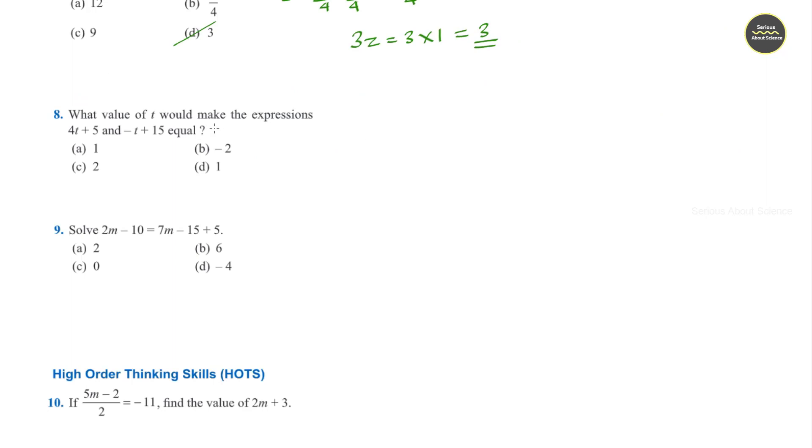What value of t would make the expressions 4t plus 5 and -t plus 15 equal? So we can equate the given two terms. First one is 4t plus 5 equal to -t plus 15. Grouping the like terms together it becomes 4t plus t equal to 15 minus 5, or t is equal to 10 divided by 5 which is 2. Option c.